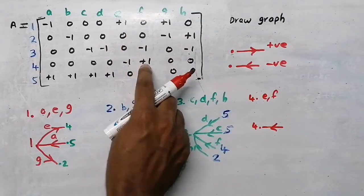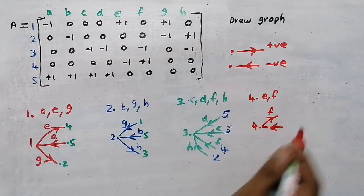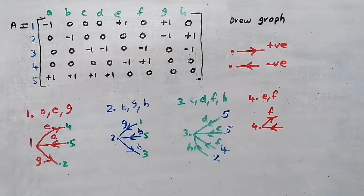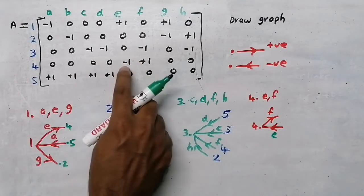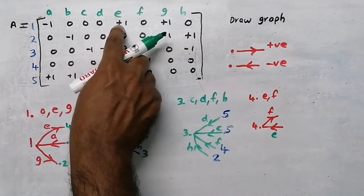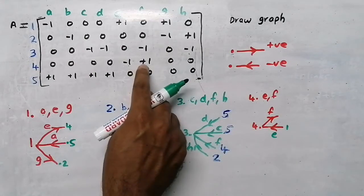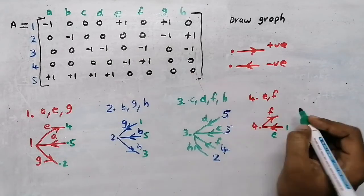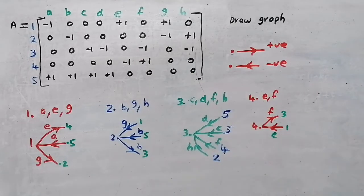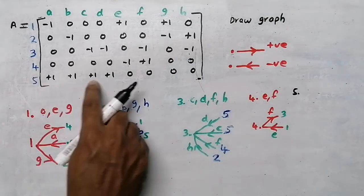Branch f is positive - positive means branch is moving away from the node. Now we need to find the end points. Branch e: the positive is at node 1, so the end point is at node 1. Branch f: positive here and negative is at node 3, so the end points are nodes 1 and 3.